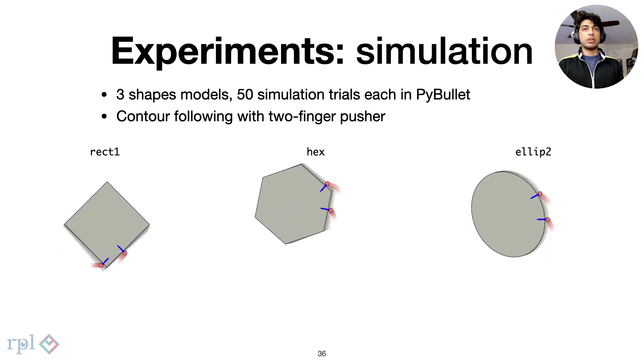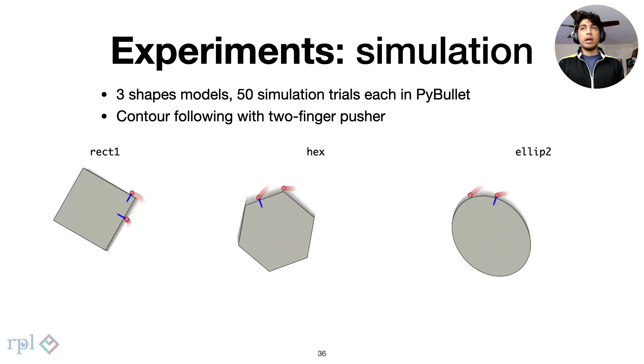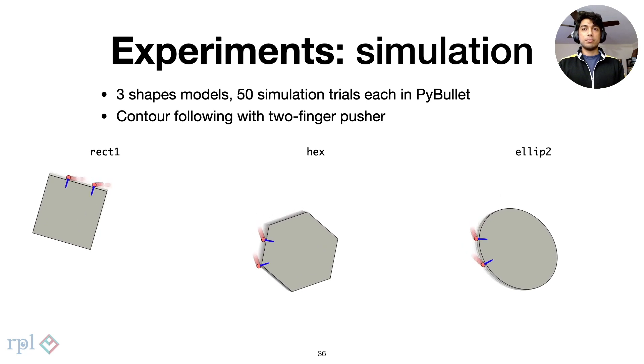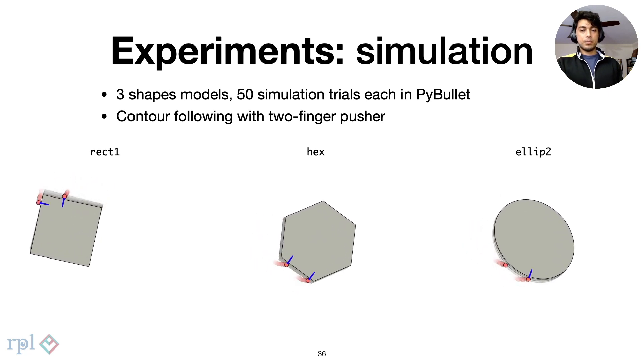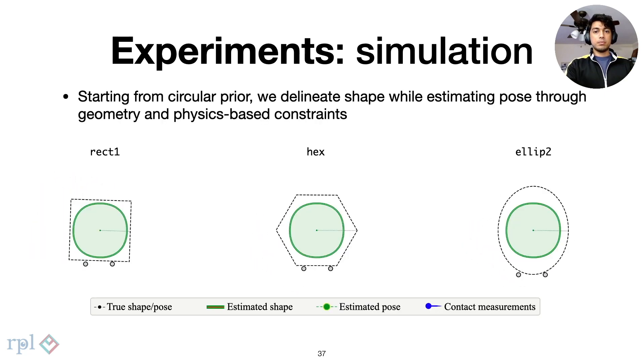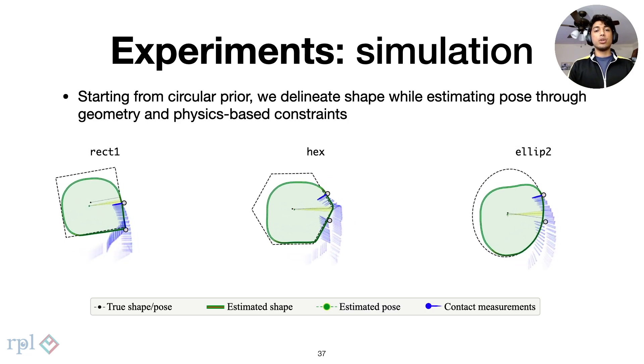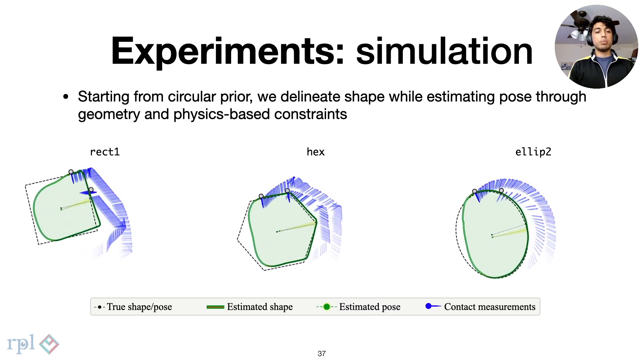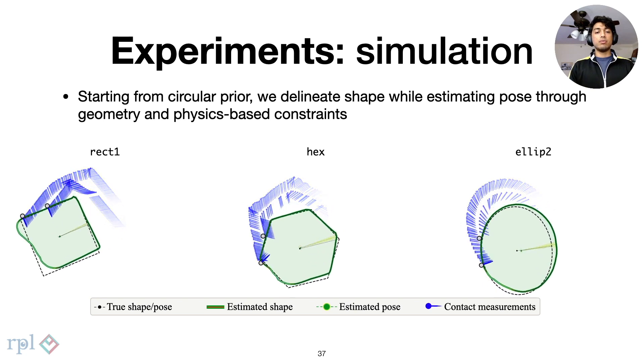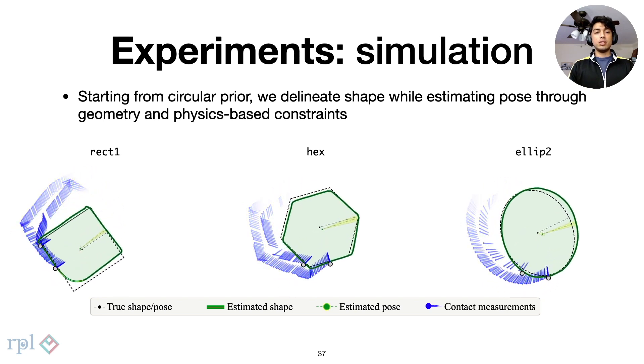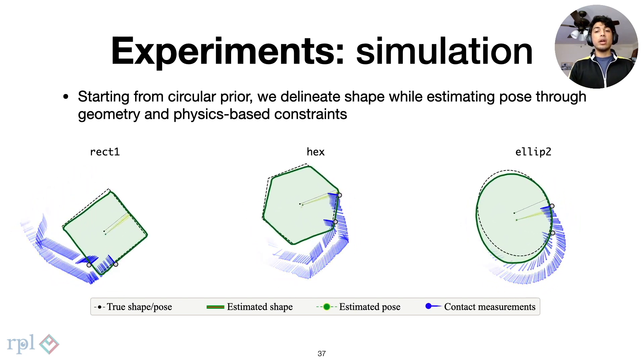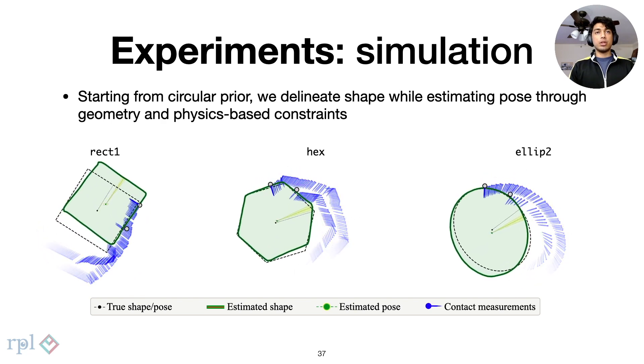This is done for the rectangular, hexagonal, and ellipse objects. With a circular prior and known initial pose, we can build the shape of the object while also accounting for its pose. The GPIS representation is smooth and generalizes well to arbitrary objects.